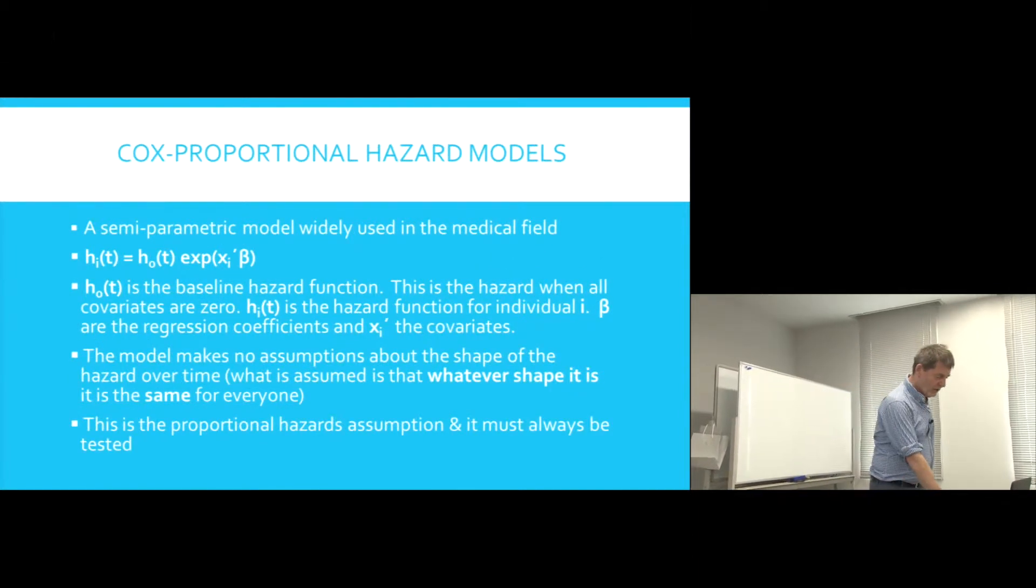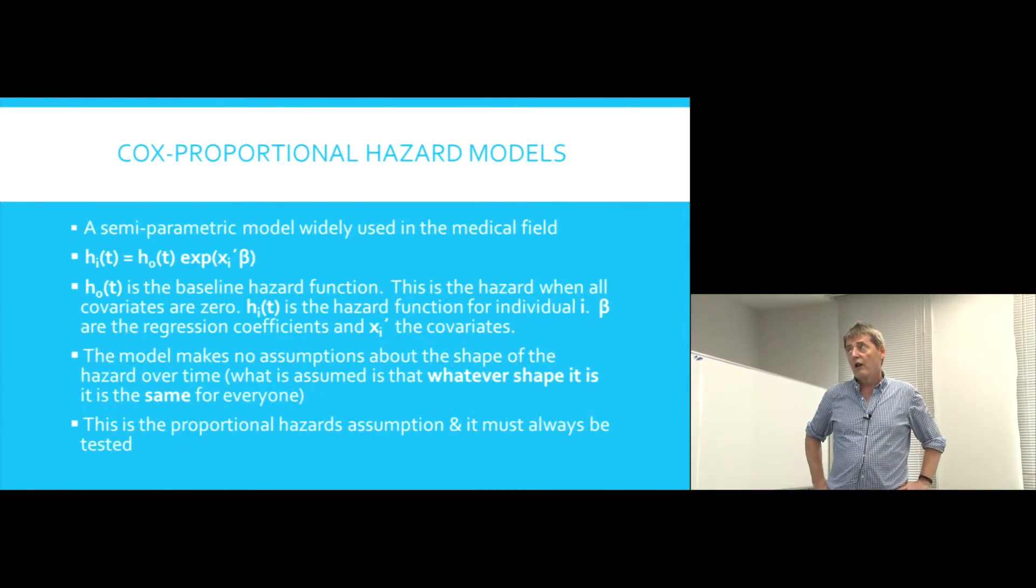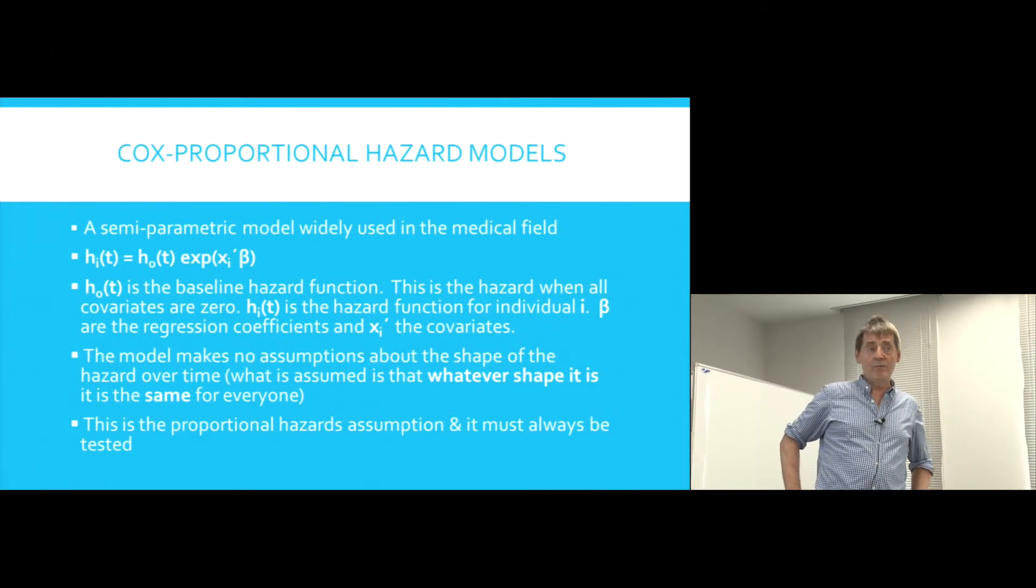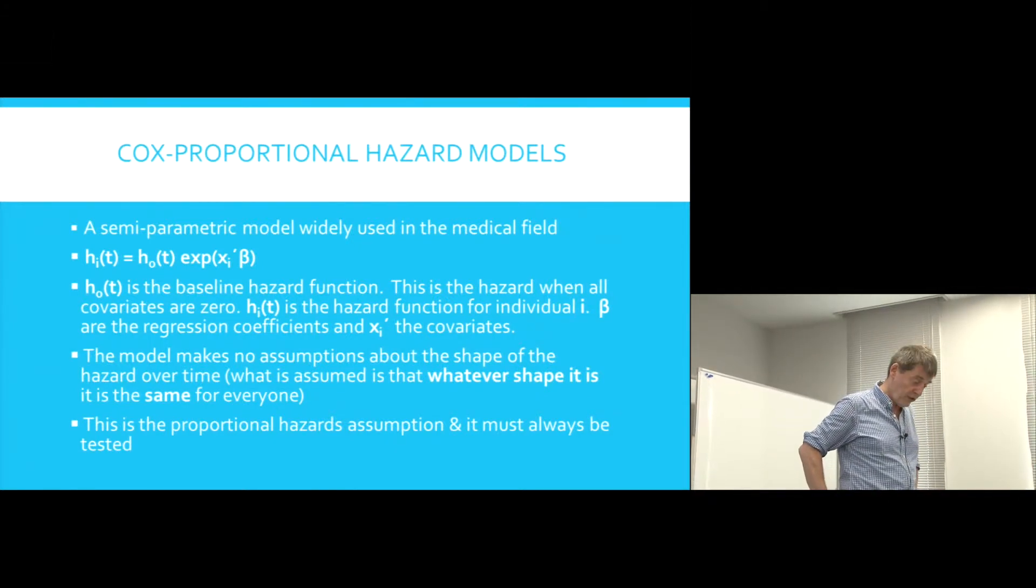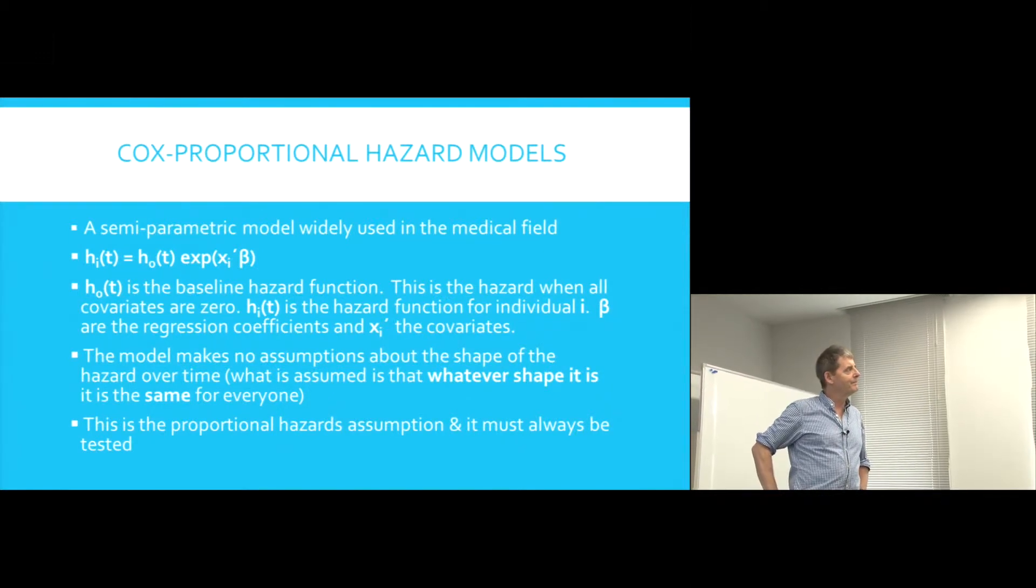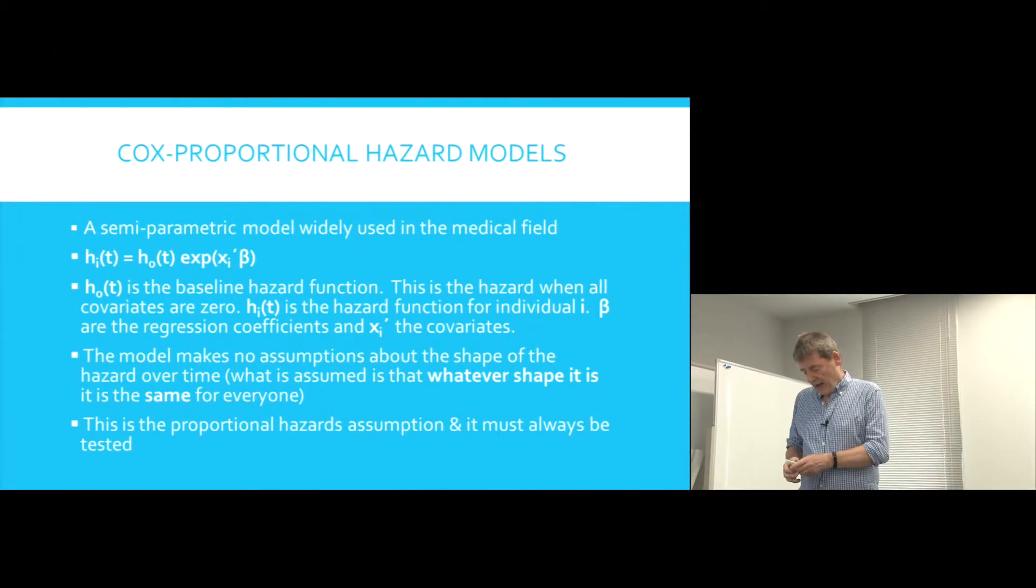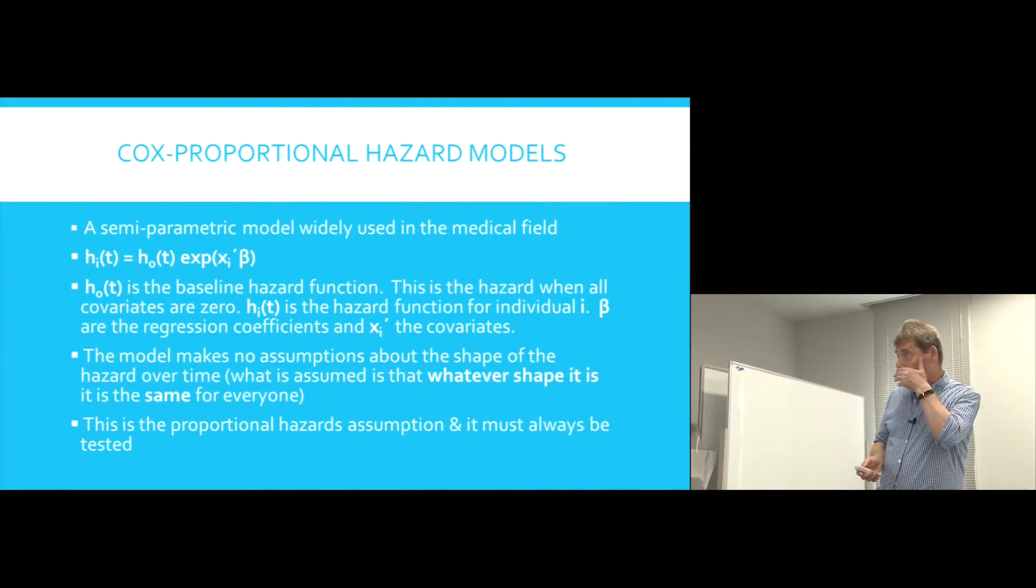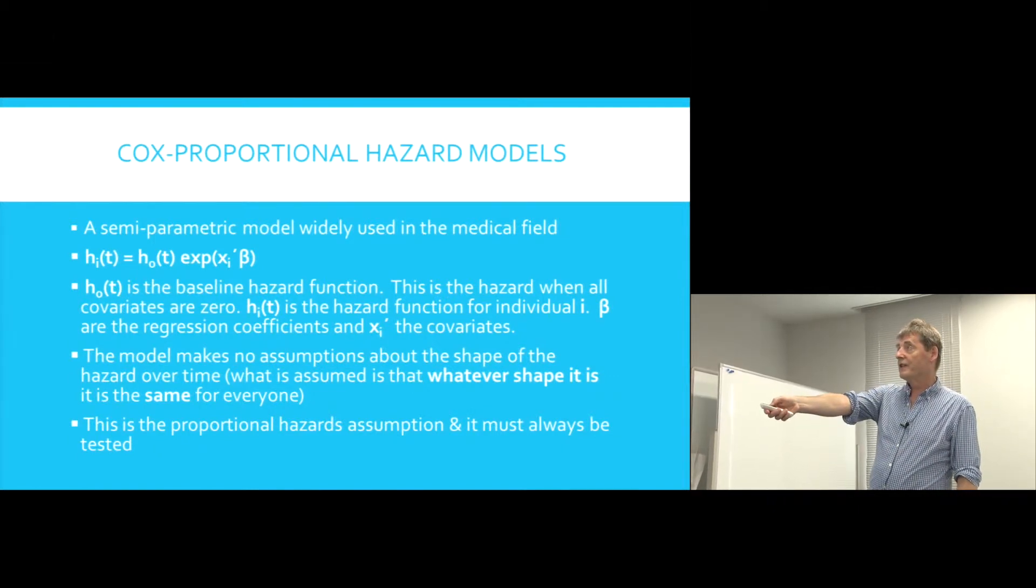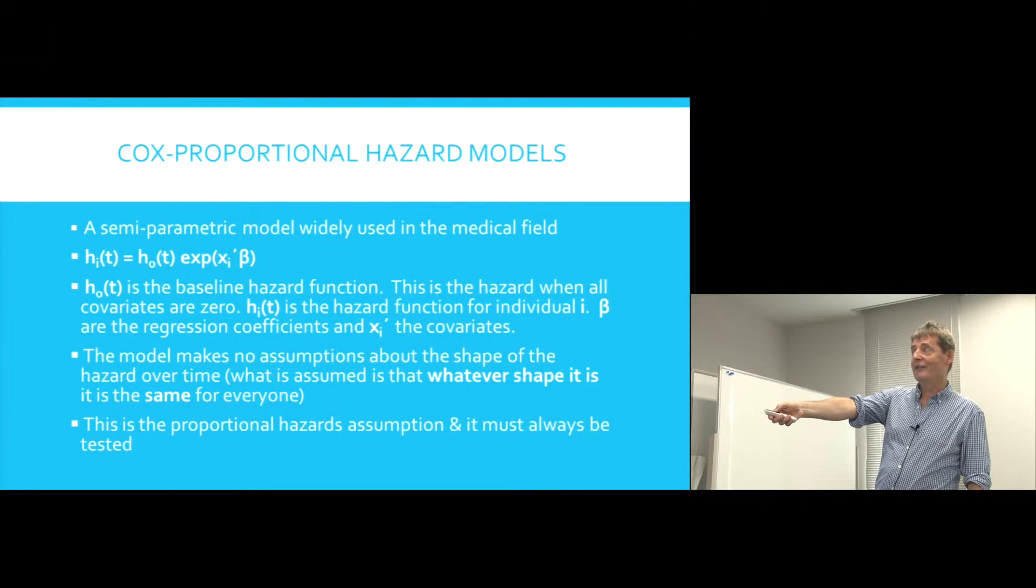I do need to say a little bit about this one, though. It's the Cox proportional hazard model. Now, this is routinely used in clinical trials or the reporting of clinical trials. And it's partly used because it's nice and simple. The hazard function is given here. Now, there's essentially two parts to it.